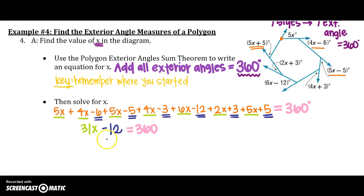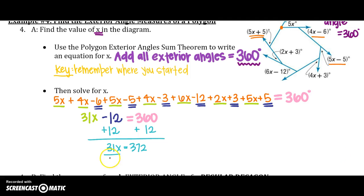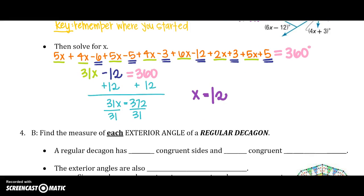Alright, so then we are just going to solve like normal. Add 12 to both sides. 31x equals 372. Divide each side by 31. After I do that, x is going to equal 12. Alright, last problem.